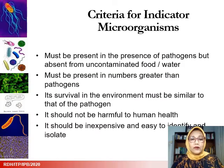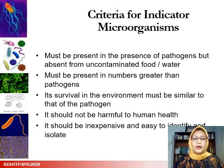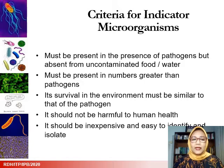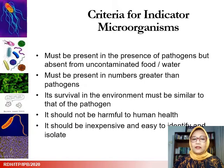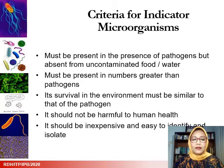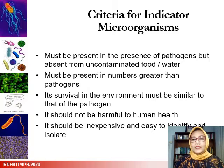Therefore, there are several criteria for indicator microorganisms. First, they must be present when pathogens are present but absent in uncontaminated food. They must be present in greater numbers than pathogens and survive similarly or better than pathogens. They should not be harmful to human health, and the testing should be inexpensive and easy.